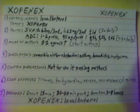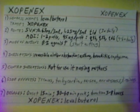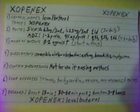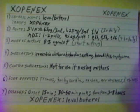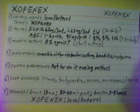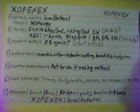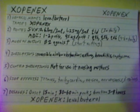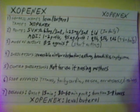Additional side effects include tachycardia, nausea, nervousness, and dizziness. Xopenex has an onset time of 15 minutes, a time to peak of 30-60 minutes, and a duration of 3-8 hours.